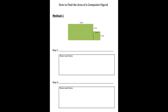Before we begin, take out the math handout you received in class today. It should look like this. There are three pages, one page for each method we'll go over today. Make sure to take notes on each method as we go through the video. You'll need to write down step one and step two for each method, and you'll need to show your work in the space provided on the handout.